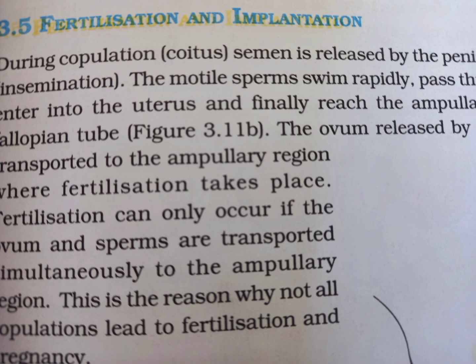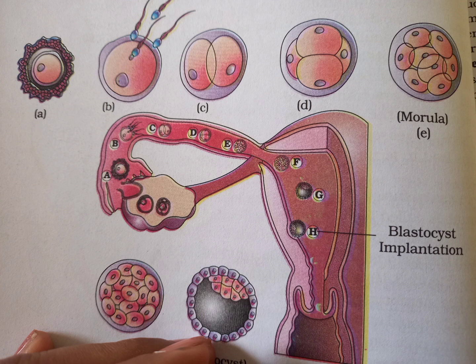Mitotic division starts as the zygote moves through the isthmus of the oviduct — the third part of the oviduct. This process is called cleavage, and the zygote moves towards the uterus.